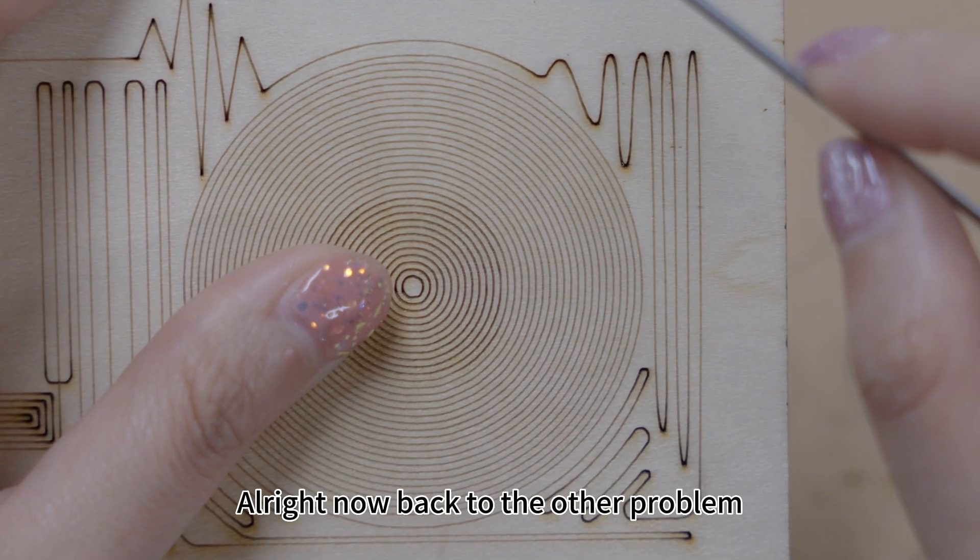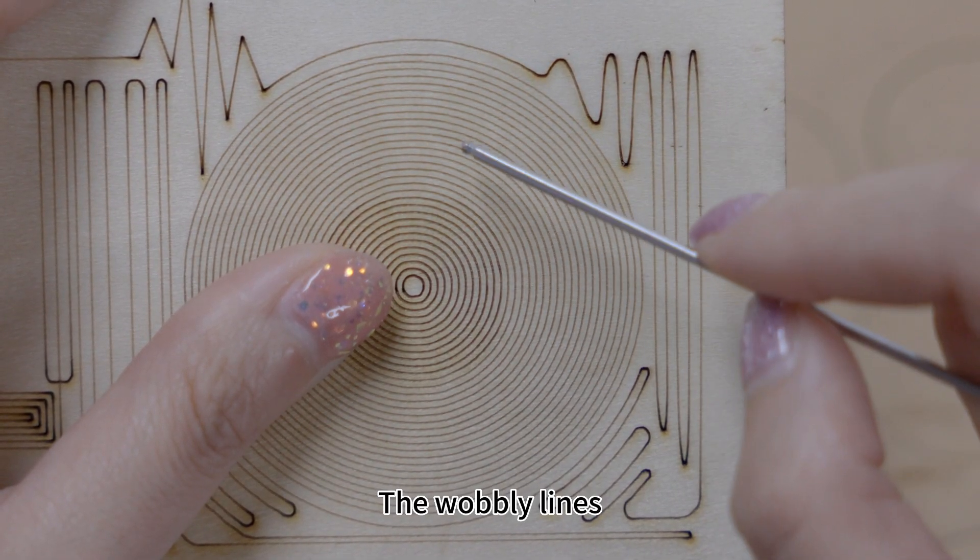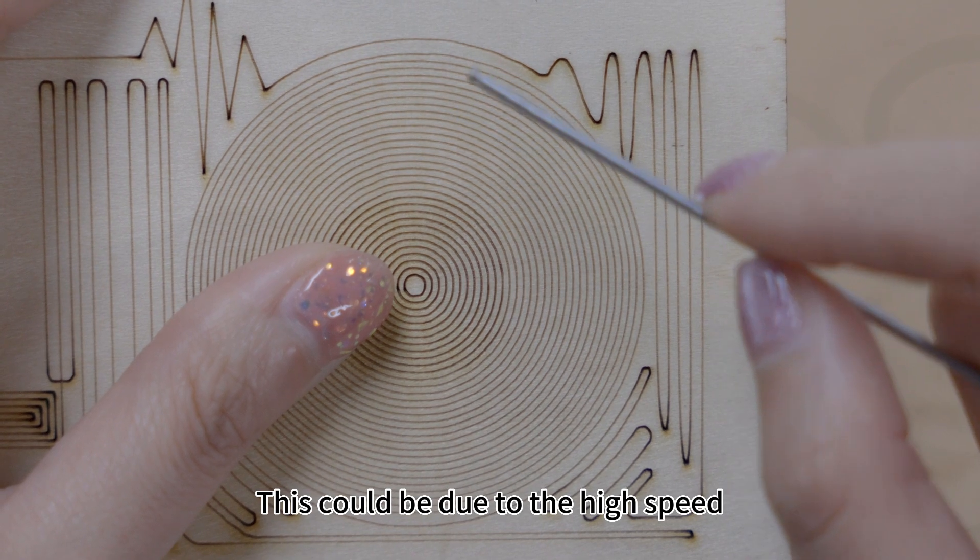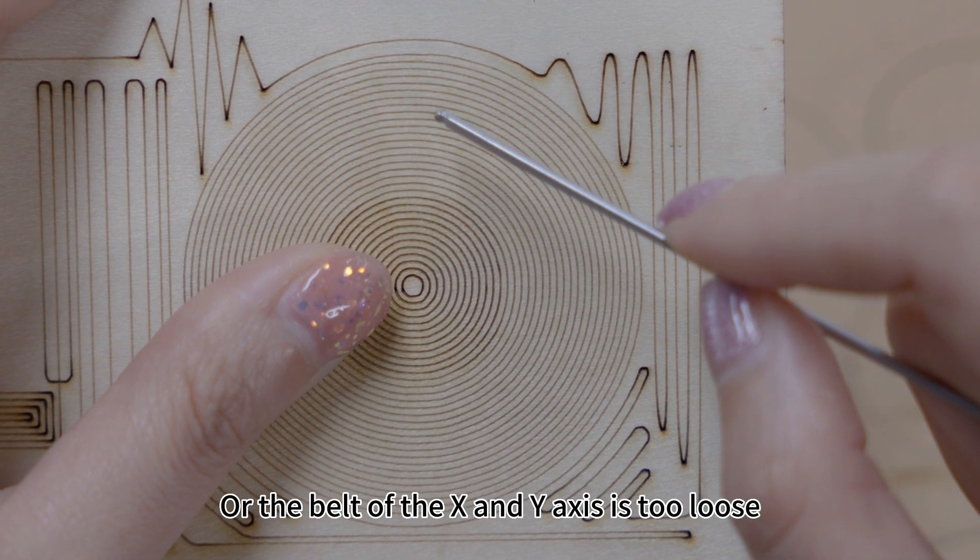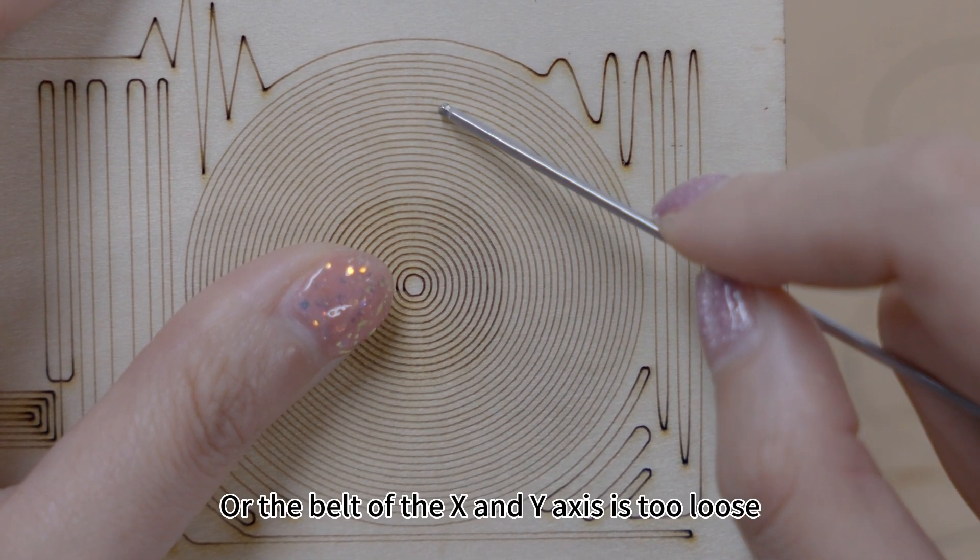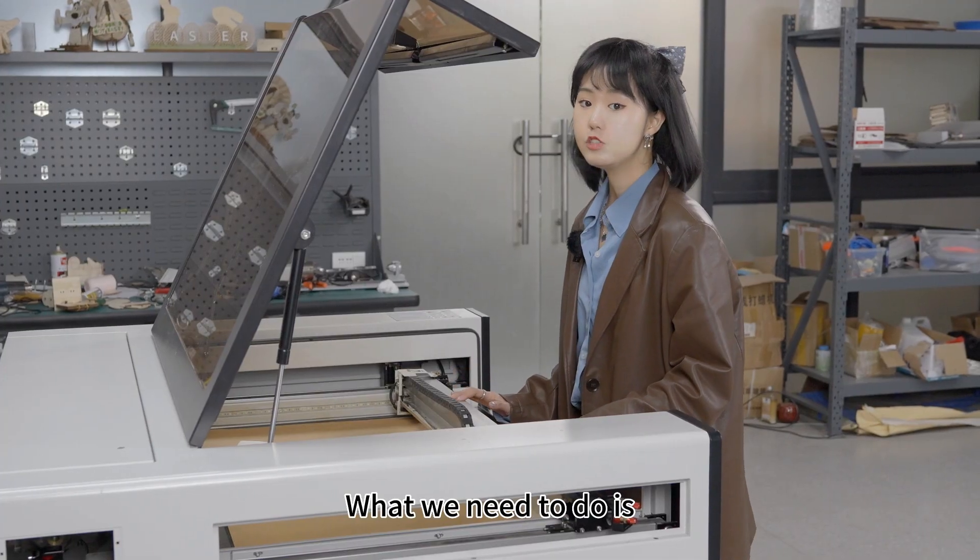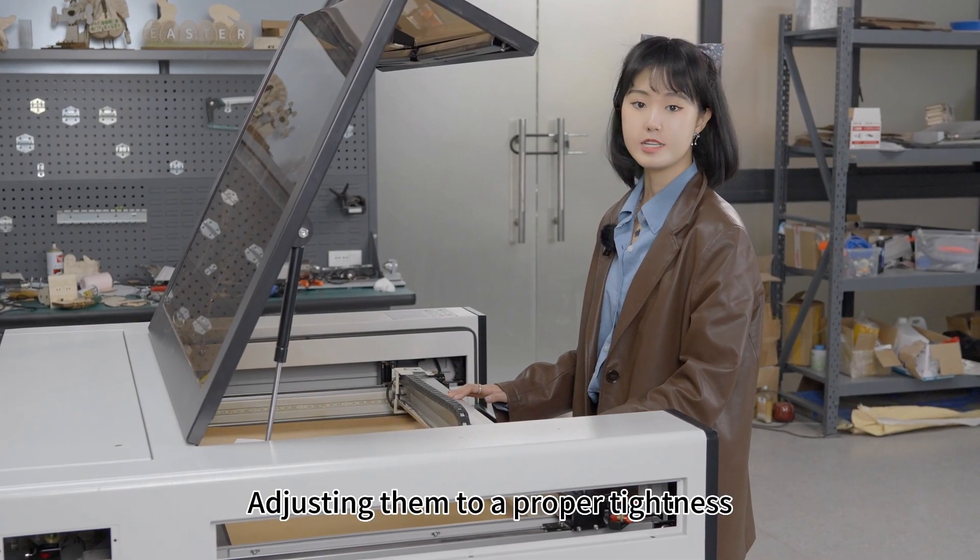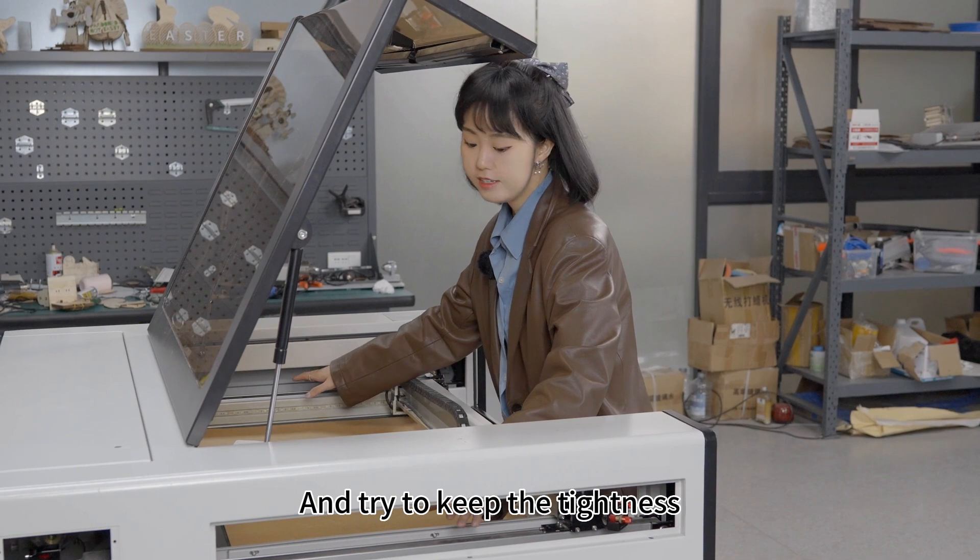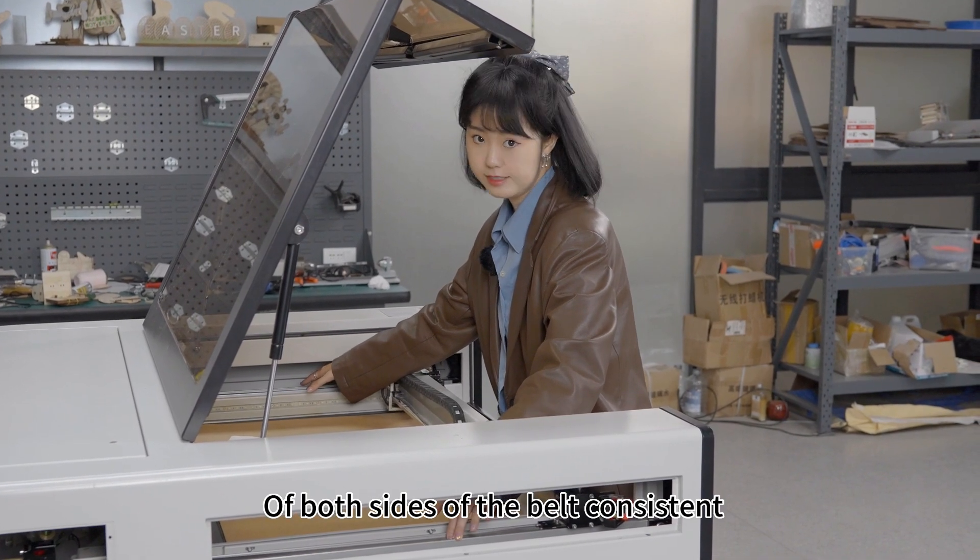All right, now back to the other problem, the wobbly lines. This could be due to the high speed, or the belt of the x and y-axis is too loose or too tight. What we need to do is adjust them to a proper tightness and try to keep the tightness of both sides of the belt consistent.